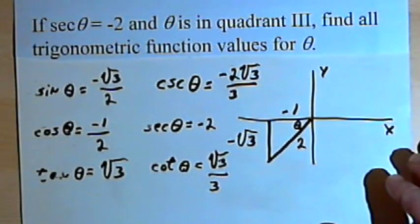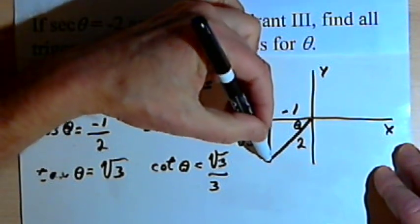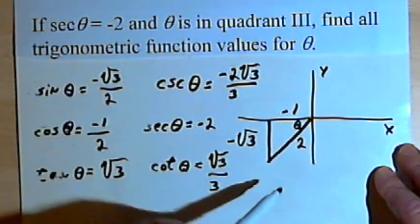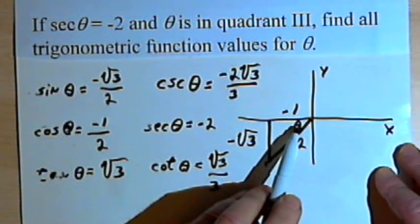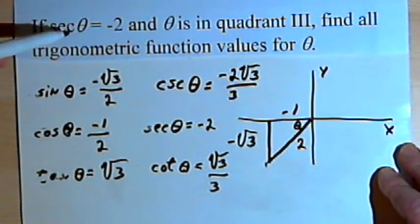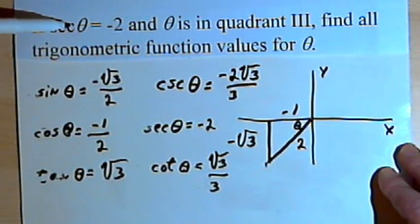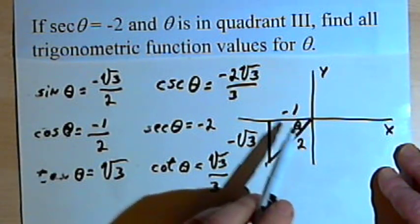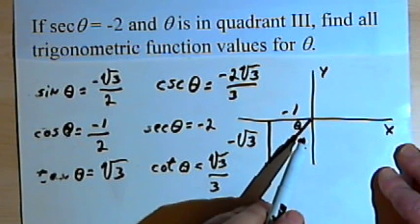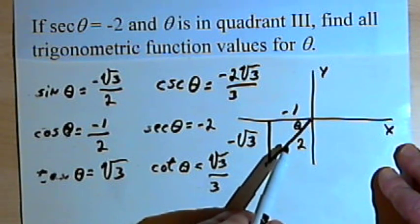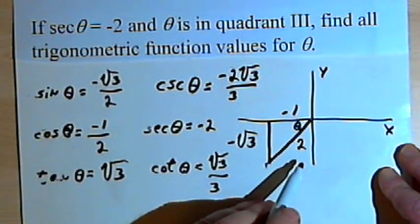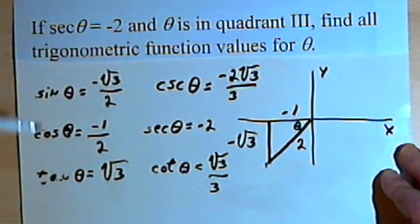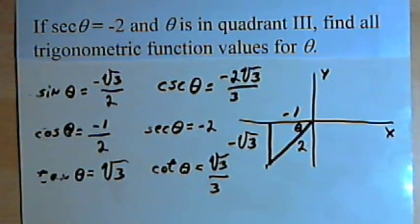So for this example, what I did was I placed a point in the quadrant that I was given. Using that point, I created a reference triangle, found the reference angle. I was able, given the one trigonometric value that I had, to fill in two parts, two sides, of this right triangle. And I was able to find the third side using the Pythagorean theorem. Once I had all three sides, or two sides and a hypotenuse, I was able to fill in all the trigonometric function values. Hope that helps. Take care. I'll see you next time.